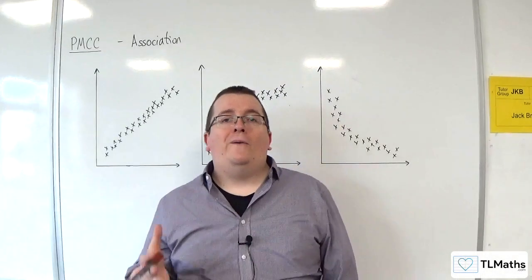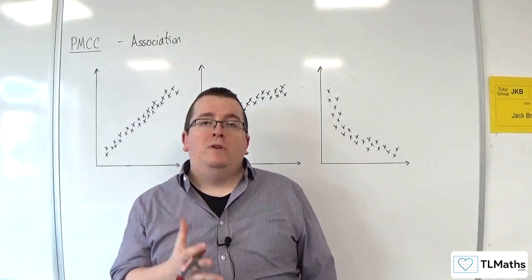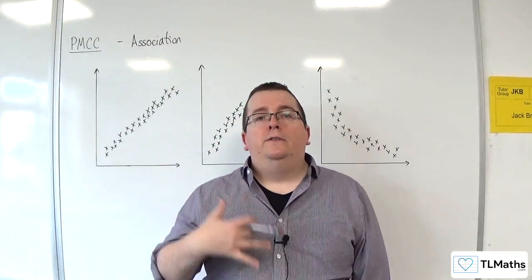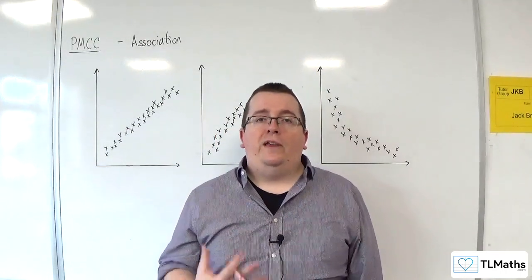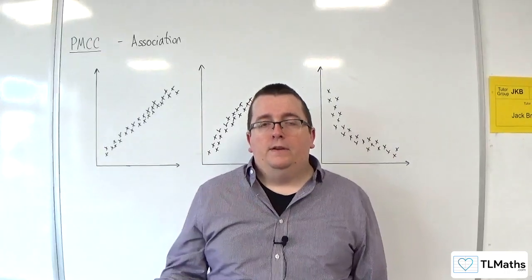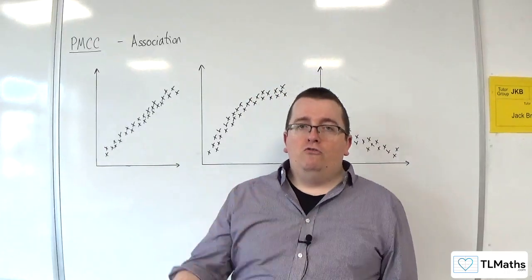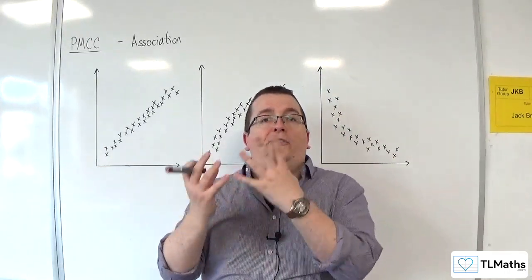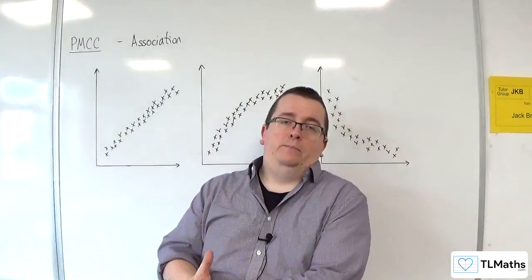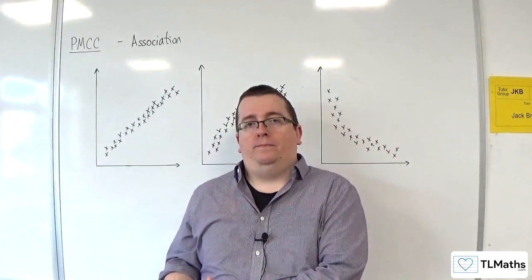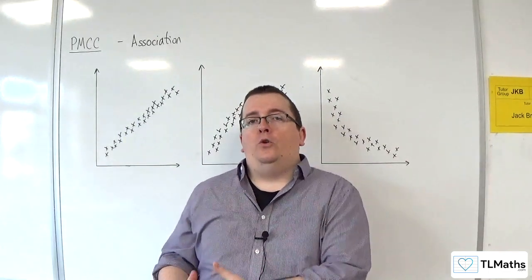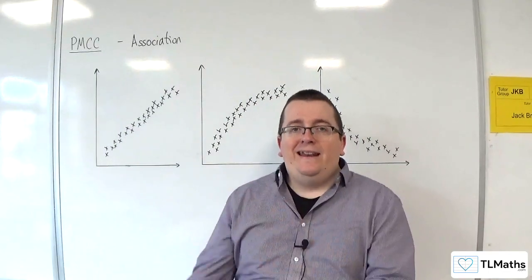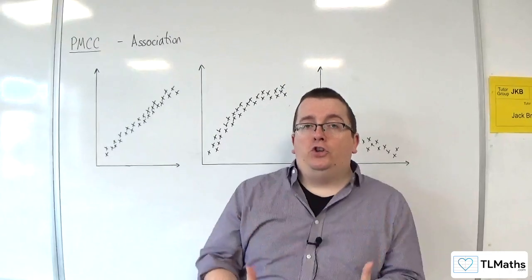When we want to talk about how closely related two variables are, the term we use is association. Correlation is one specific example of association — correlation is linear association.